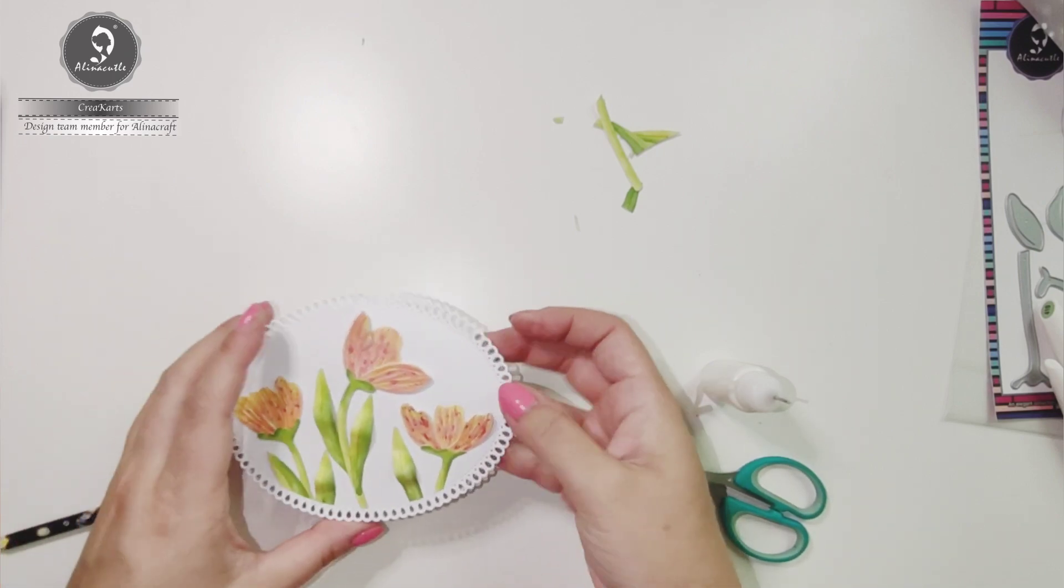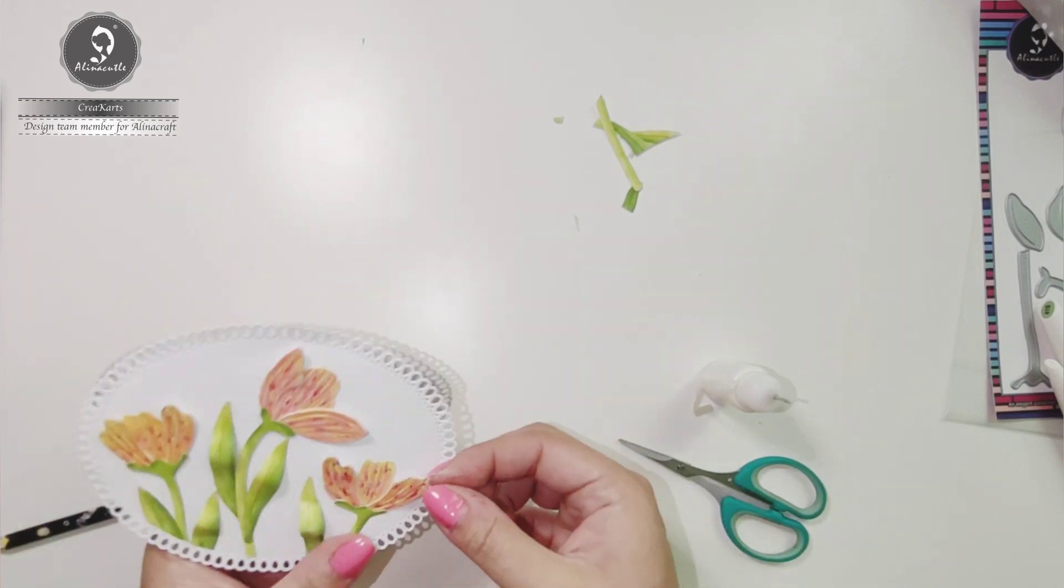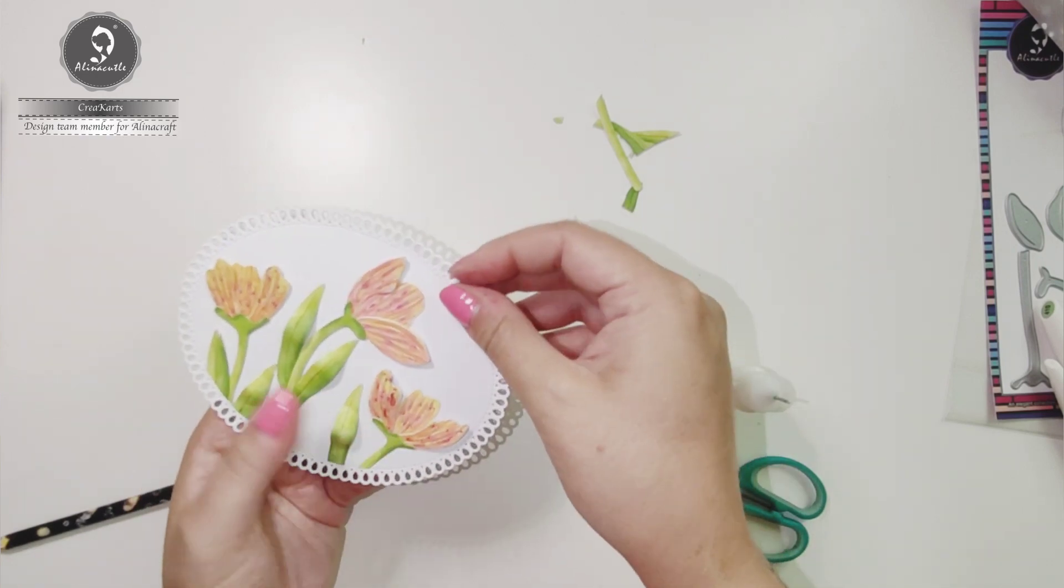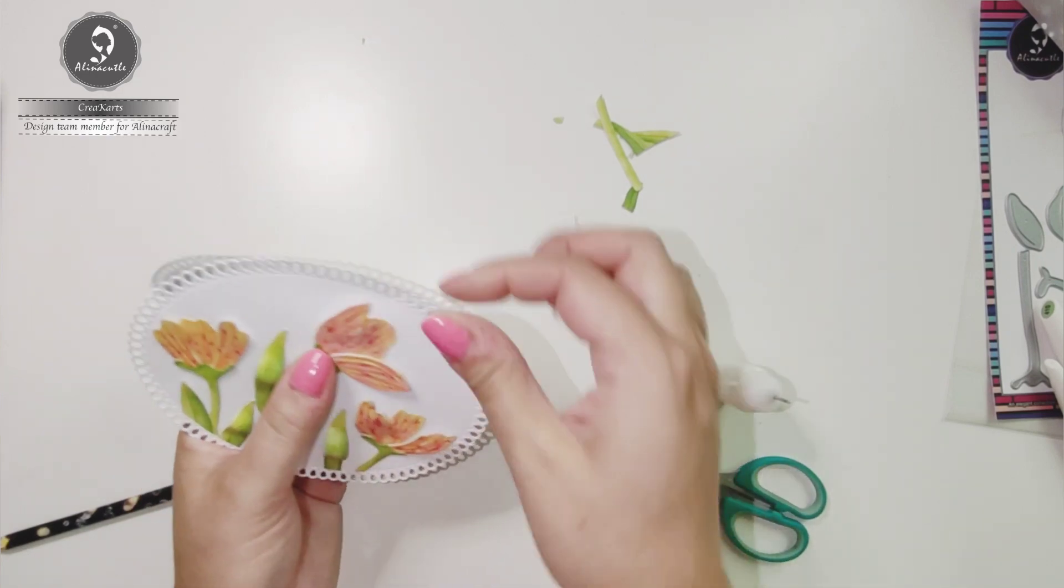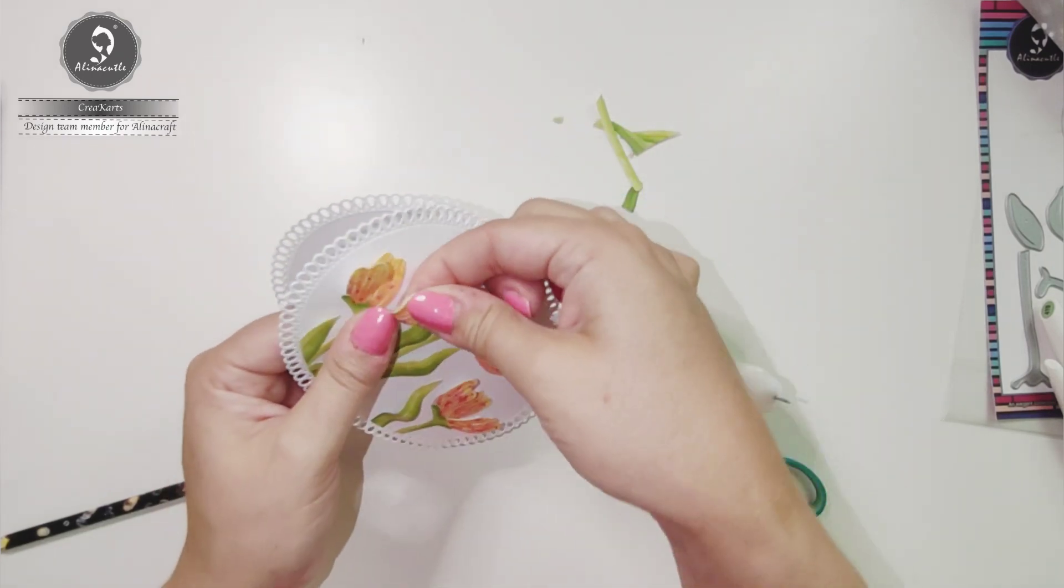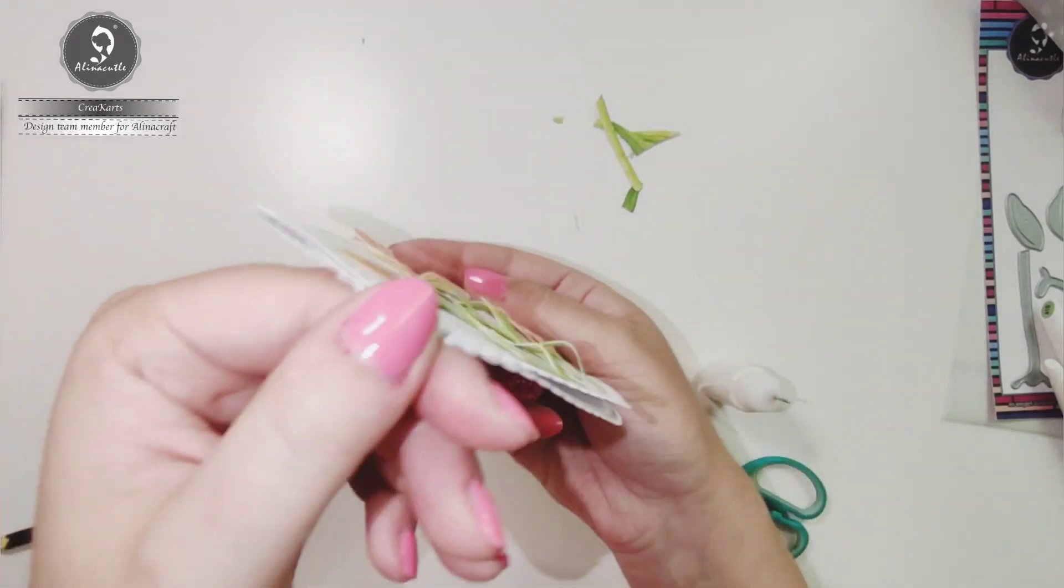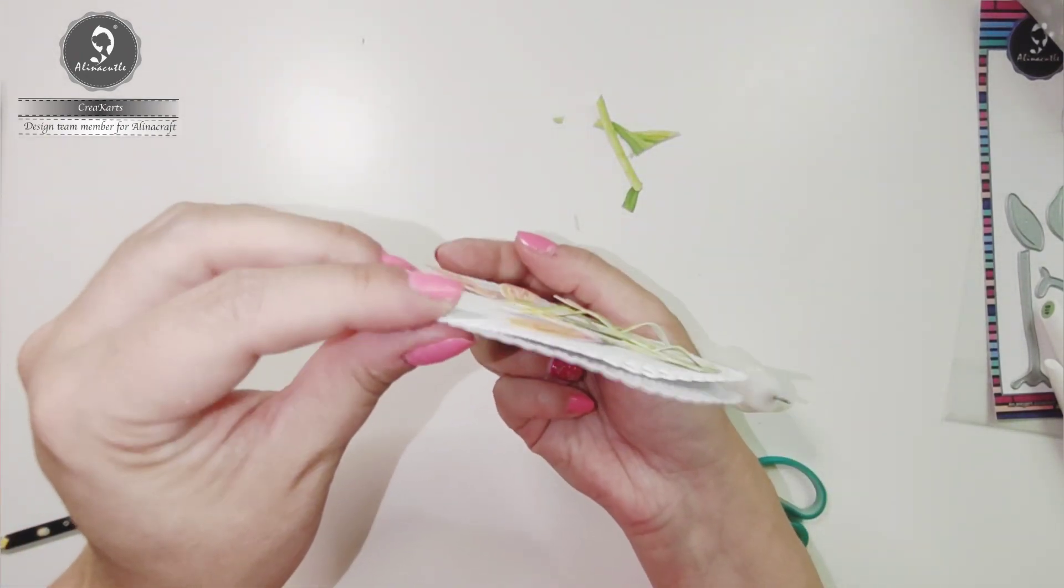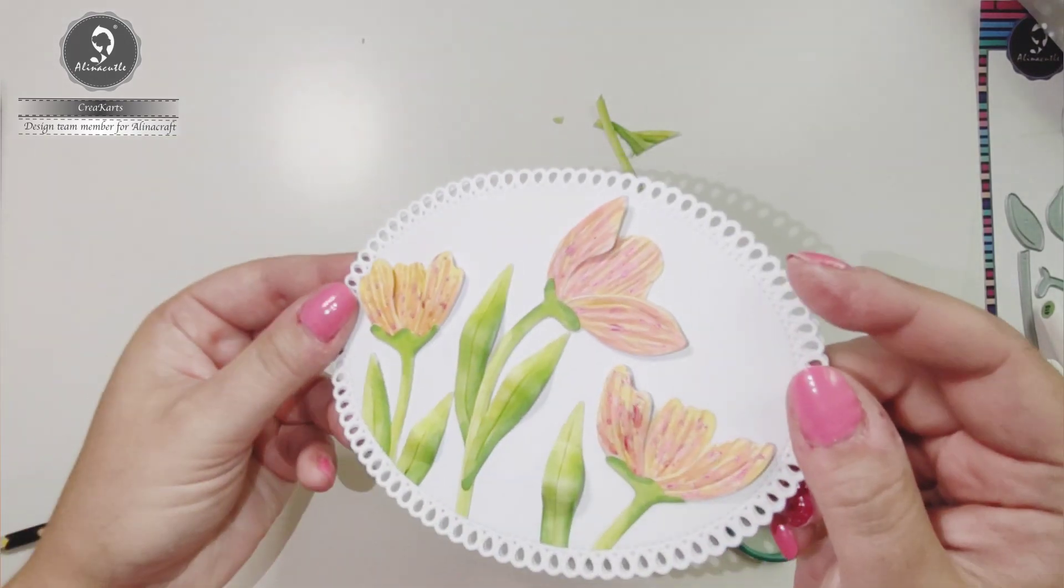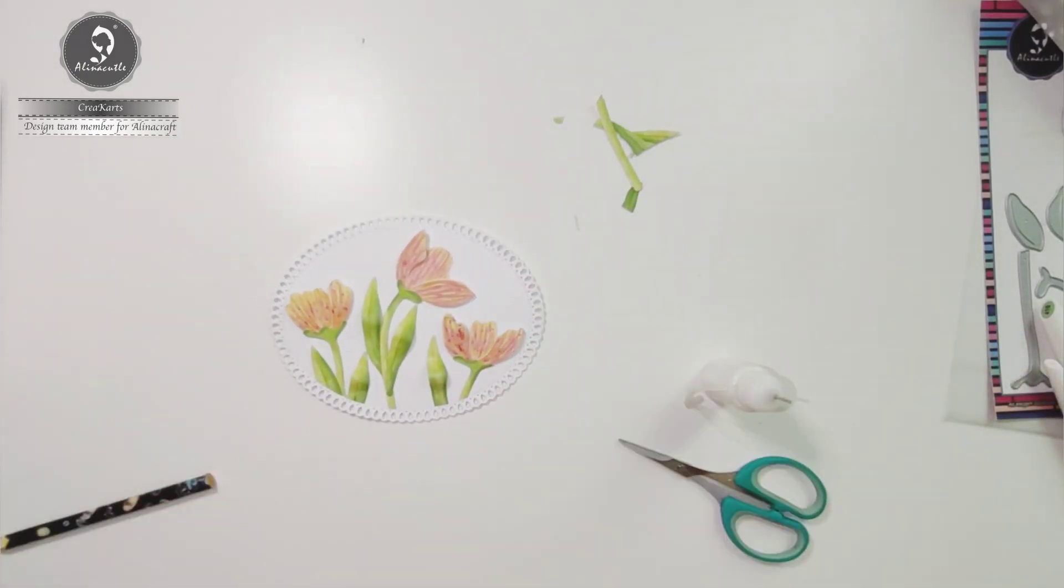I'm going to shape the outer leaves a bit with my fingers. And now you can see how it looks from the side. This time I'm not going to add any sentiment on it because I love how it looks right now.